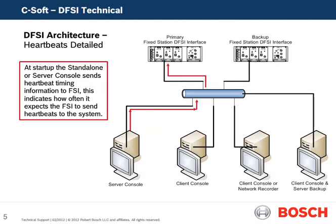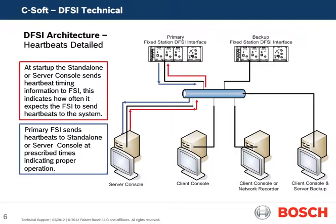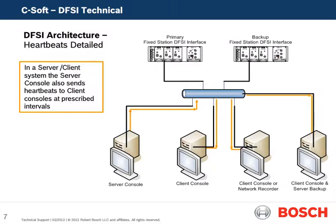Looking at the DFSI architecture in regards to heartbeats: at startup, stand-alone or server consoles send heartbeat timing information to the fixed station, indicating how often it expects the fixed station to send heartbeats back. This communication is depicted by the red arrows. The primary fixed station sends heartbeats back at the prescribed times, as shown by the blue arrows. In a server client system, the server console also sends heartbeats to client consoles, depicted by the yellow arrows.